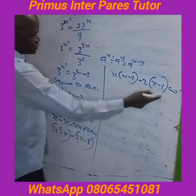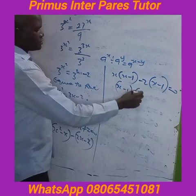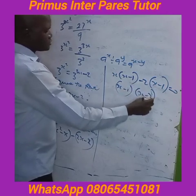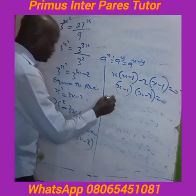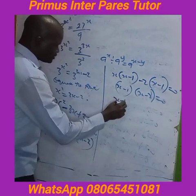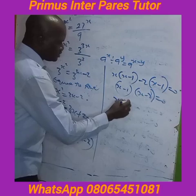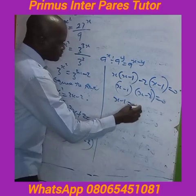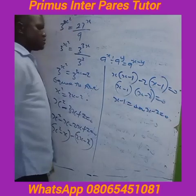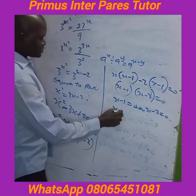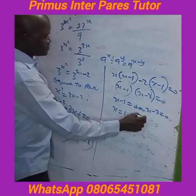So what is common is x minus 1, giving you x minus 1 times s minus 2 equal to zero. Then you will have x minus 1 equal to zero or x minus 2 equal to zero. Therefore s equal to 1 or s equal to 2.